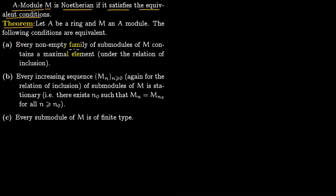Condition A: every non-empty family of submodules of M contains a maximal element under the relation of inclusion. So if you take any family of submodules of M, there will be some maximal element in that non-empty family.